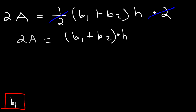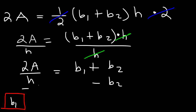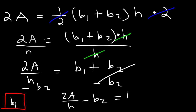The opposite of multiplication is division, so I'm going to divide both sides by H. On the right side, H divided by H is 1. So I have 2A divided by H, and that's equal to B1 plus B2. Now I need to get rid of B2. B1 and B2 are separated by addition, and the opposite of addition is subtraction, so I subtract both sides by B2. So 2A over H minus B2 equals B1, and that's the answer.